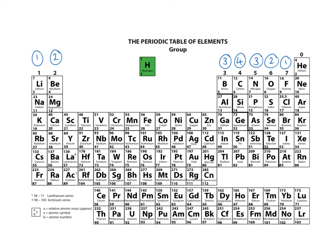Going back to our example of calcium bromide: calcium is in group two, which means it has a valency of two. Then we need to find bromine — bromine is in group seven, so looking to the top of the group you can see it has a valency of one. So my bromine has a valency of one.